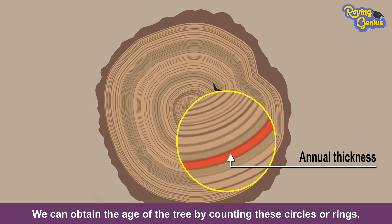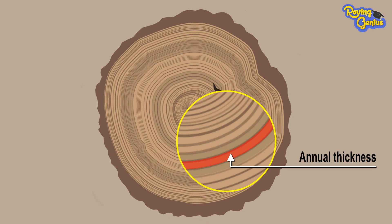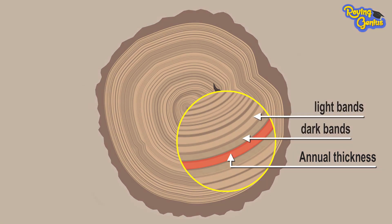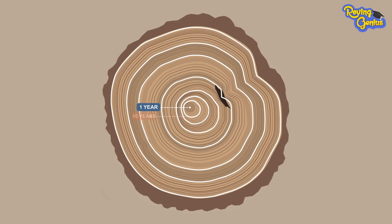We can obtain the age of the tree by counting these circles or rings. Rings can be composed of both darker and lighter bands. Generally, the dark bands are counted to estimate the age.